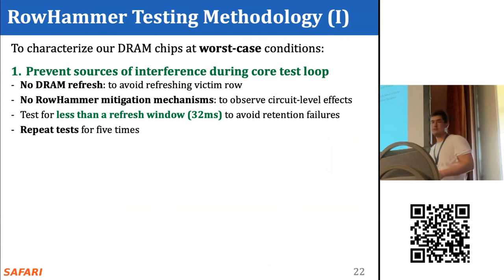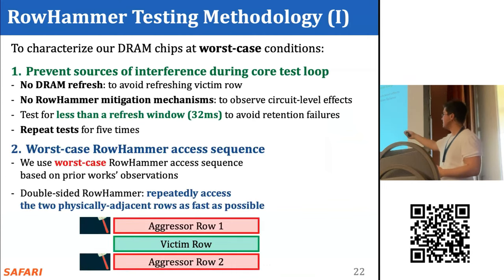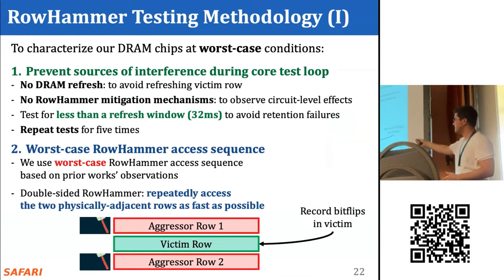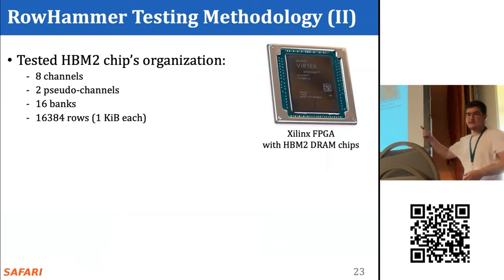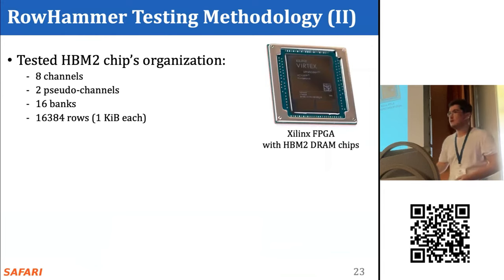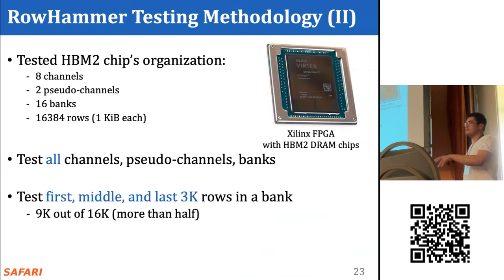This setup gives us fine-grained control over DRAM commands, with as low as 1.66 nanosecond delay between consecutive DRAM commands issued to the HBM chip. We carefully reuse the rigorous rowhammer characterization methodology from prior work, using the worst-case double-sided aggressor access pattern. Our HBM2 chip contains 8 channels, 2 pseudo channels per channel, 16 banks per pseudo channel, and 16,000 one-kilobyte rows per bank.